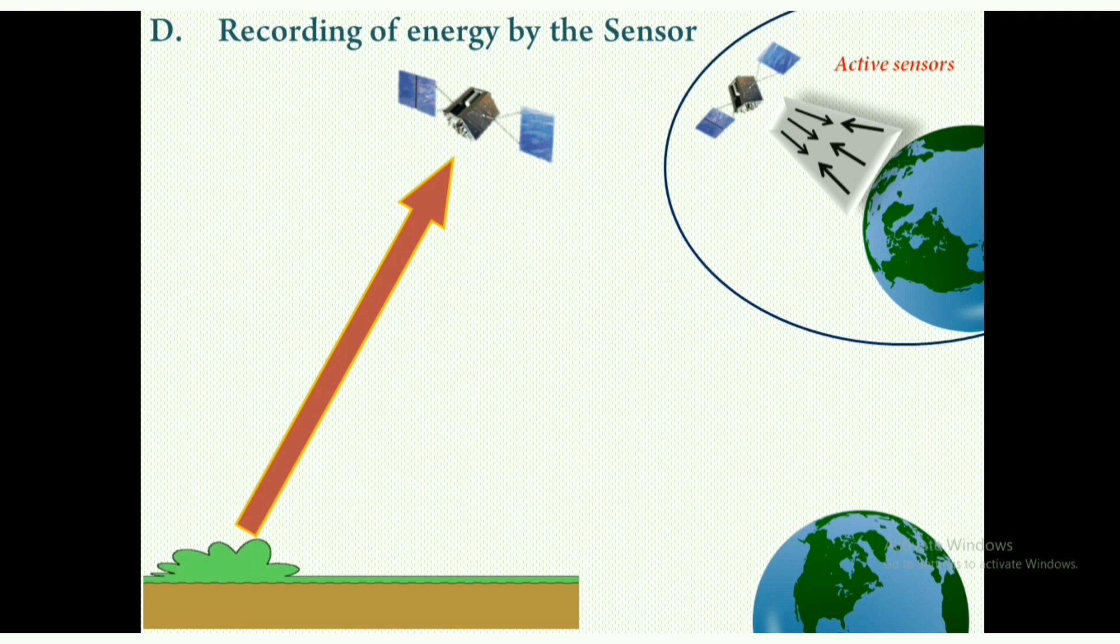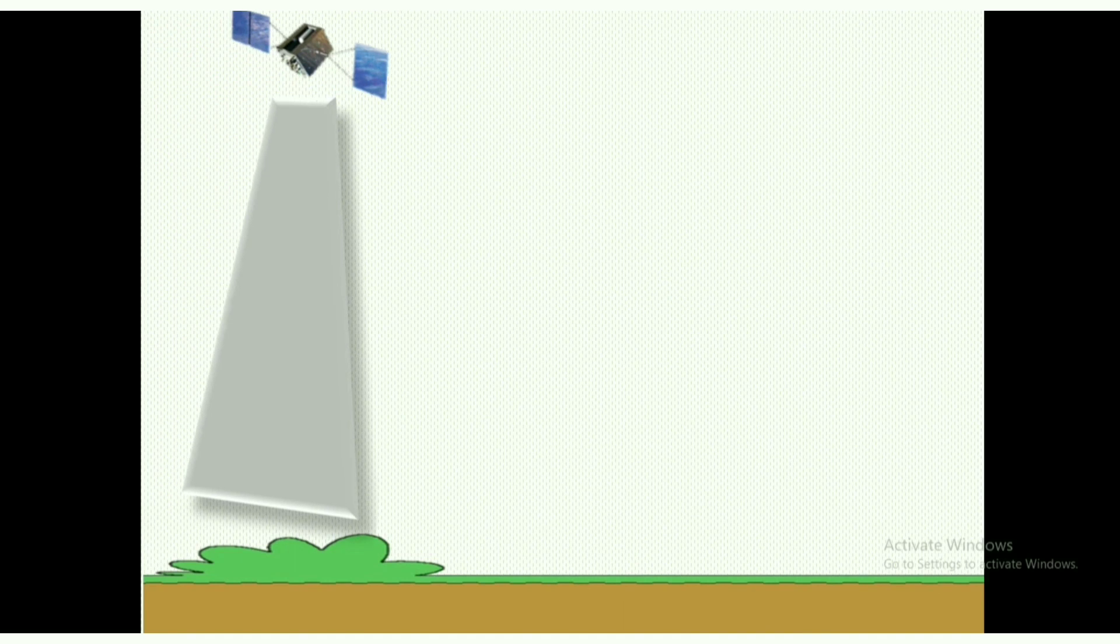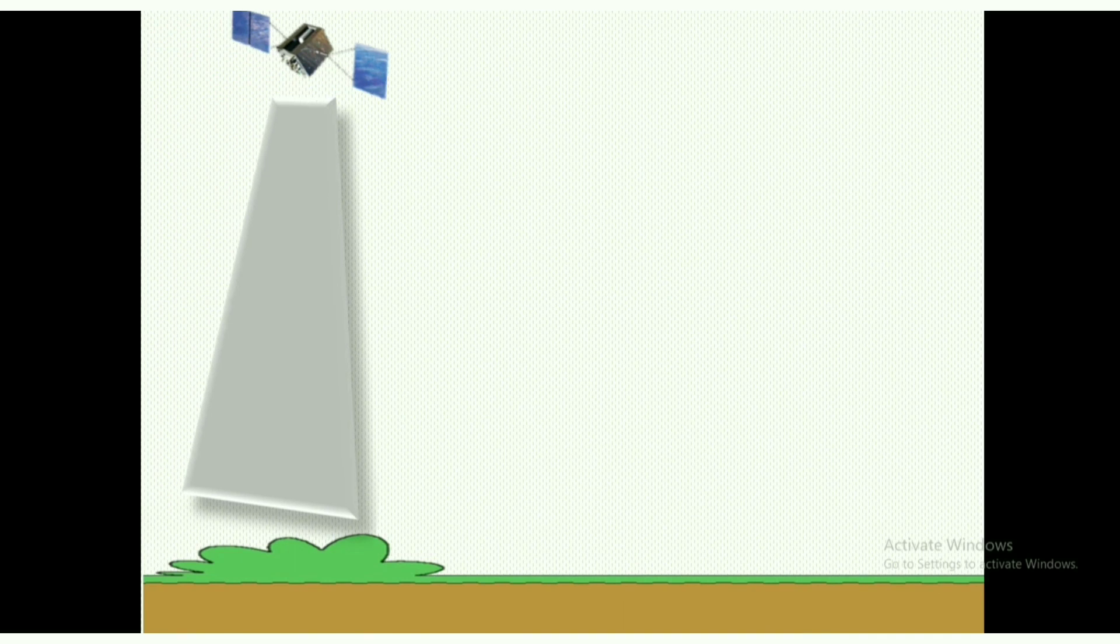Passive sensors are those which take the help of a natural energy source like the sun's energy for illumination. A sensor may be present in space as satellites, or on an aircraft, or on the ground. These are the different platforms used in remote sensing as I have shown in the previous video.